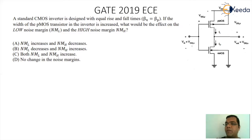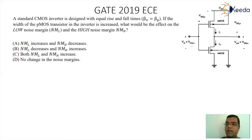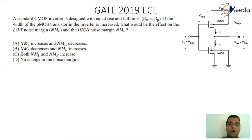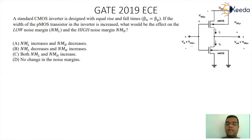For the top PMOSFET, there is a VDD battery and the drain point is connected as an output point. For the bottom MOSFET, the drain works like an output point and the source is connected to ground. This is basically the circuitry of a CMOS inverter, and we are supposed to study the impact on noise margin high and noise margin low if the width of the PMOS transistor is increased.